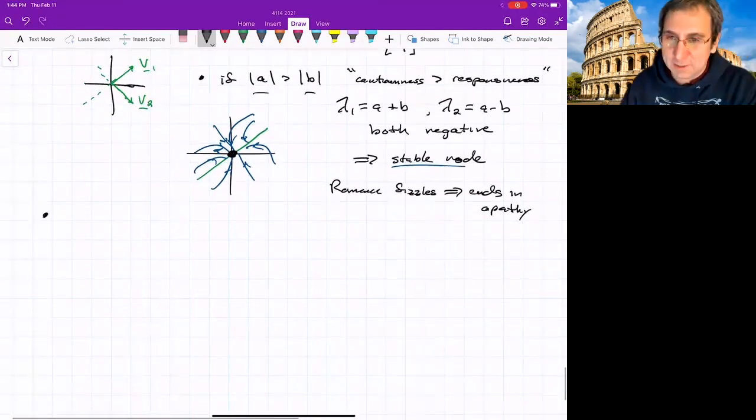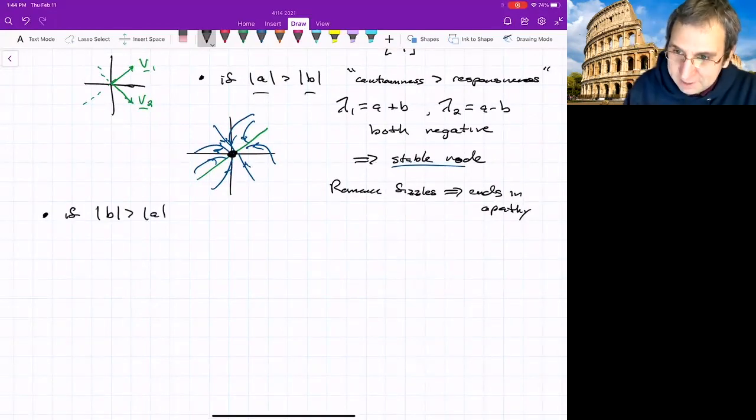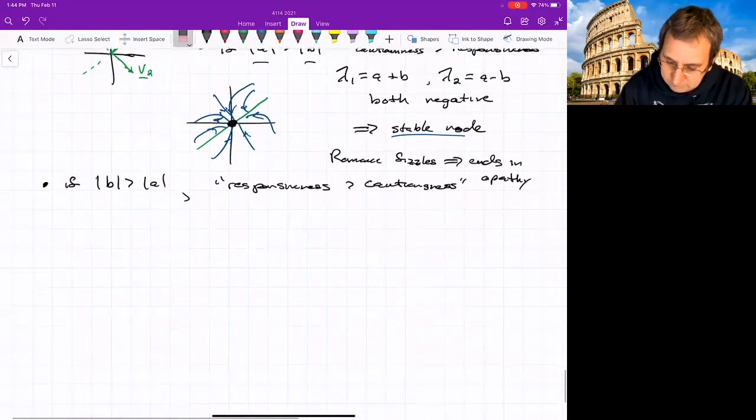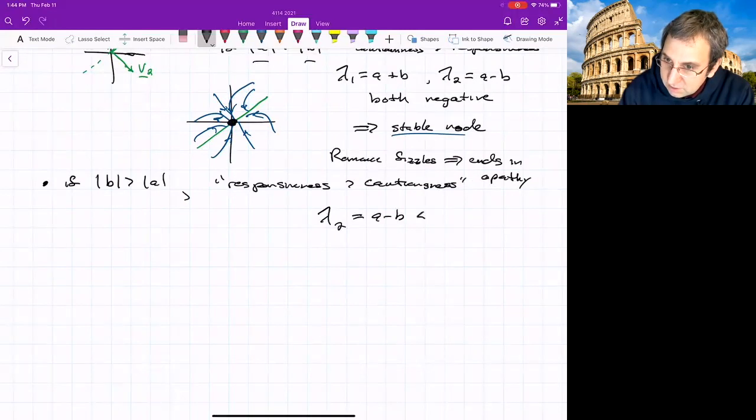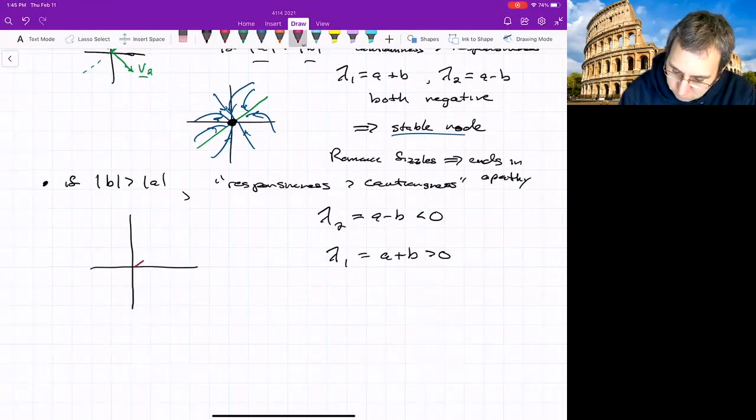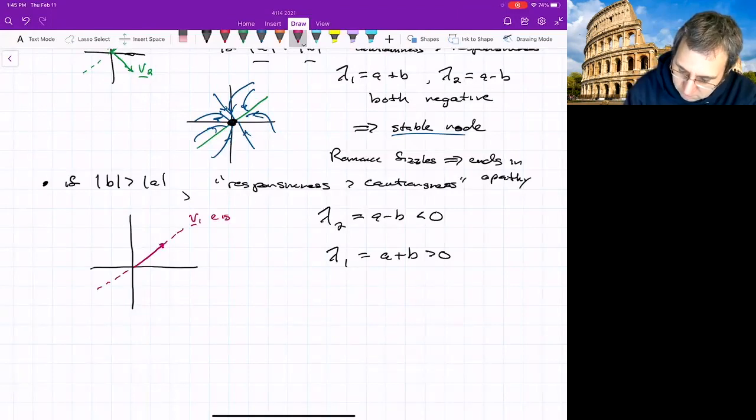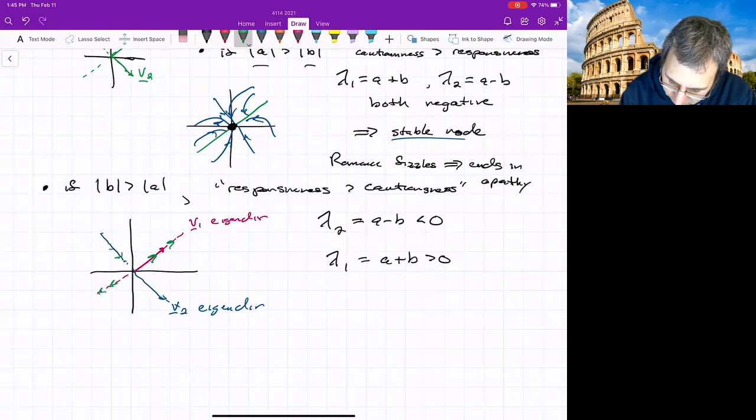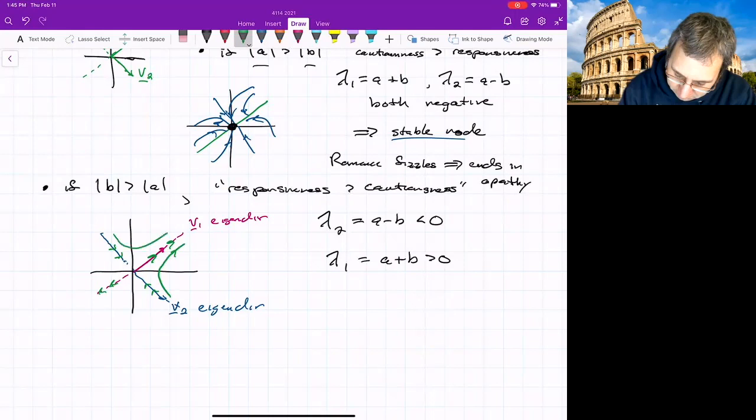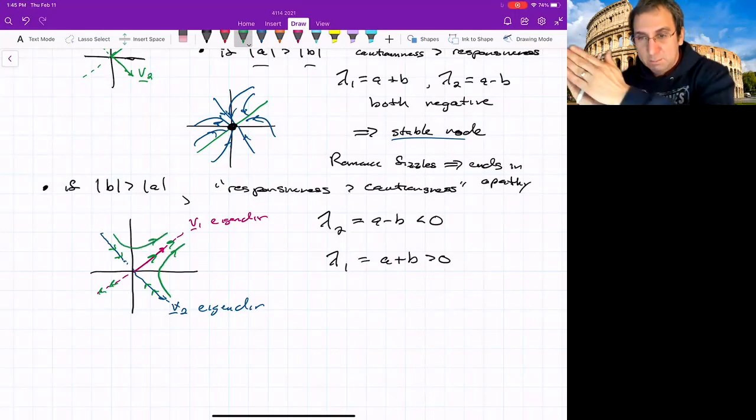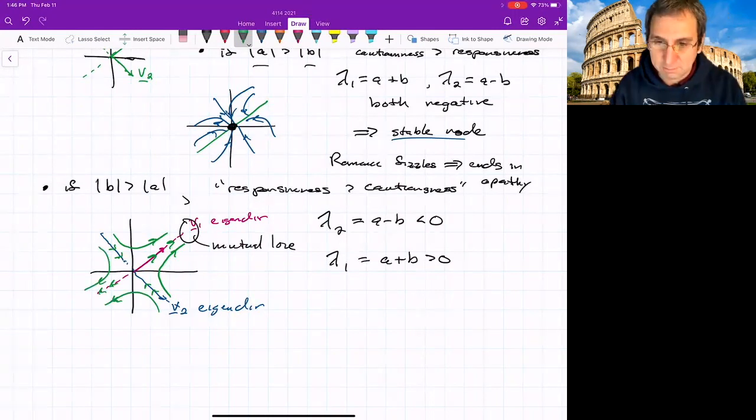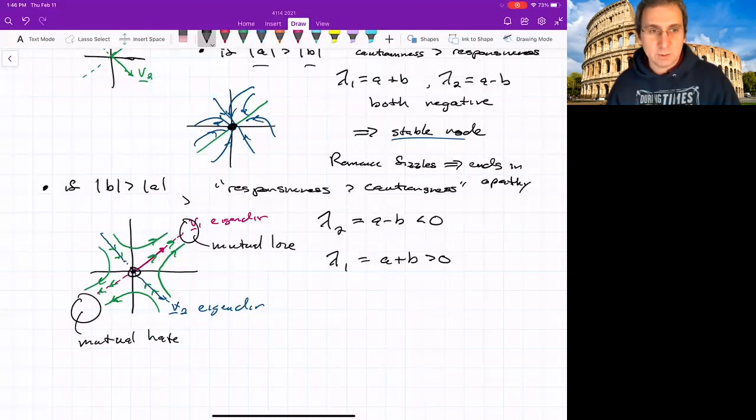On the other hand, what if responsiveness is better than cautiousness? Magnitude of B is greater than magnitude of A. Responsiveness is greater than cautiousness. I think things could end up really well, or they could end up really bad. We have lambda 2 is A minus B. So that's going to be less than 0. Lambda 1 is A plus B. So that's going to be greater than 0. So that means along the direction, we'll call this direction, right? This was that V1, the V1 eigen direction, V2 eigen direction. So along V1, things are escaping. They're leaving. And along this other one, they're approaching. So we've got a saddle. If you start above the V2 eigen direction, then there'll be this mutual love. Although if they start below that, then it'll be just kind of terrible, like ever-increasing exponential mutual hate. And apathy is this unstable point at the origin.